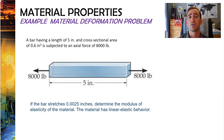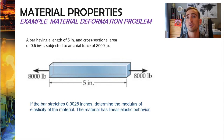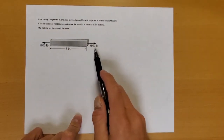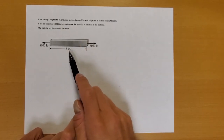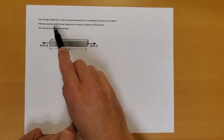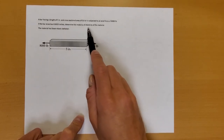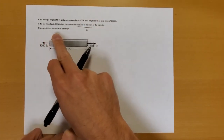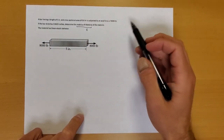Now let's look at how we can apply this equation to a real-life problem. We have a bar with 8,000 pounds of tension pulling on either side. It's 5 inches long initially, and we're told how much it stretches. The question asks us to figure out what Young's modulus is for this material. Let me jump to a handwritten solution and show you how to apply this equation and solve this problem.